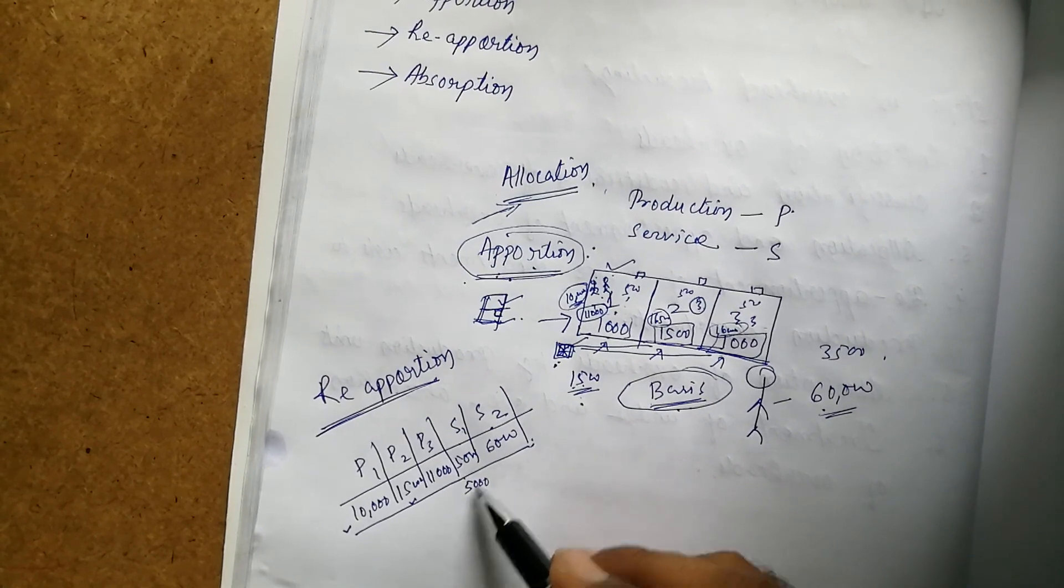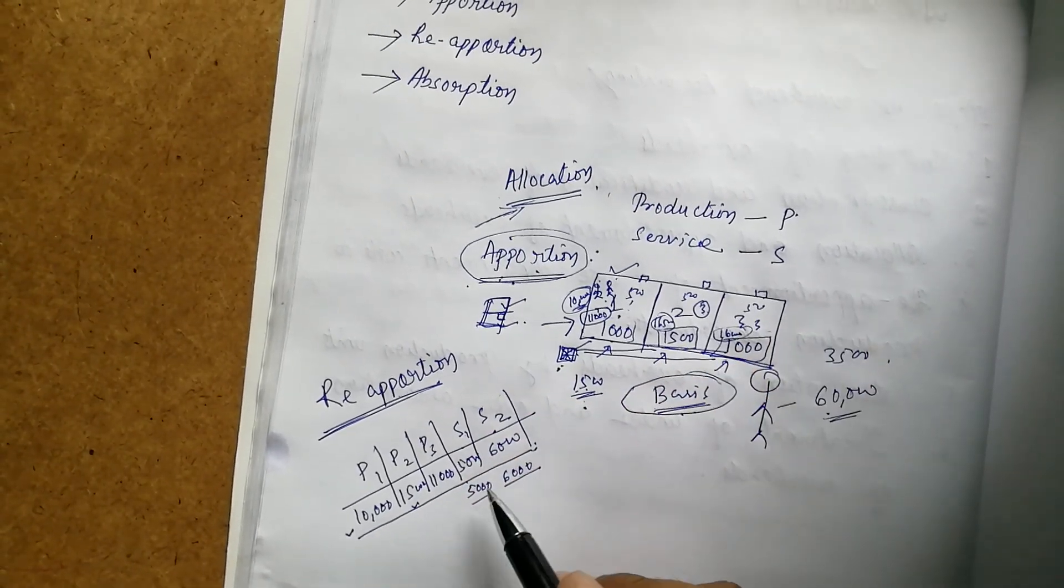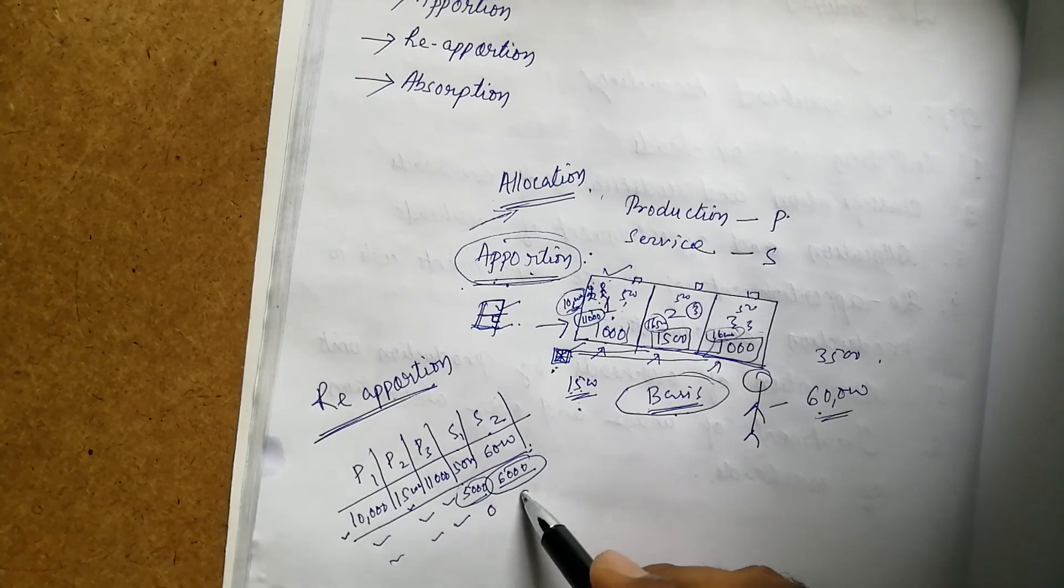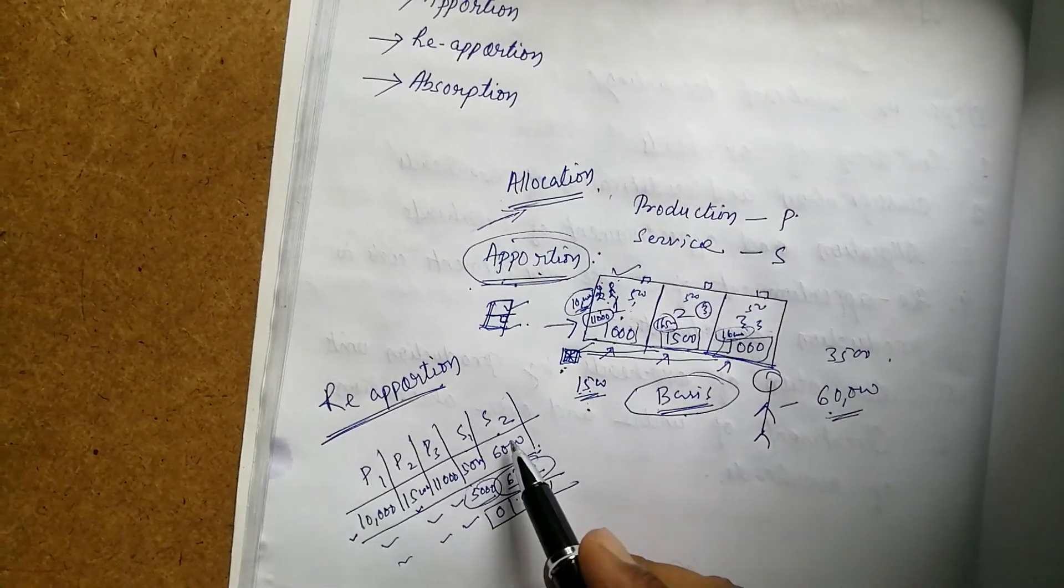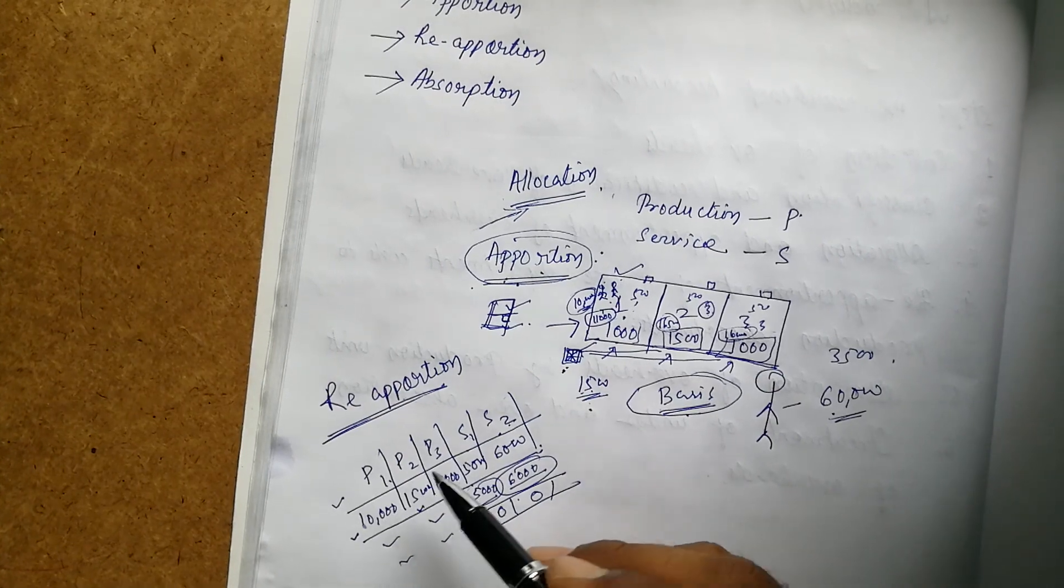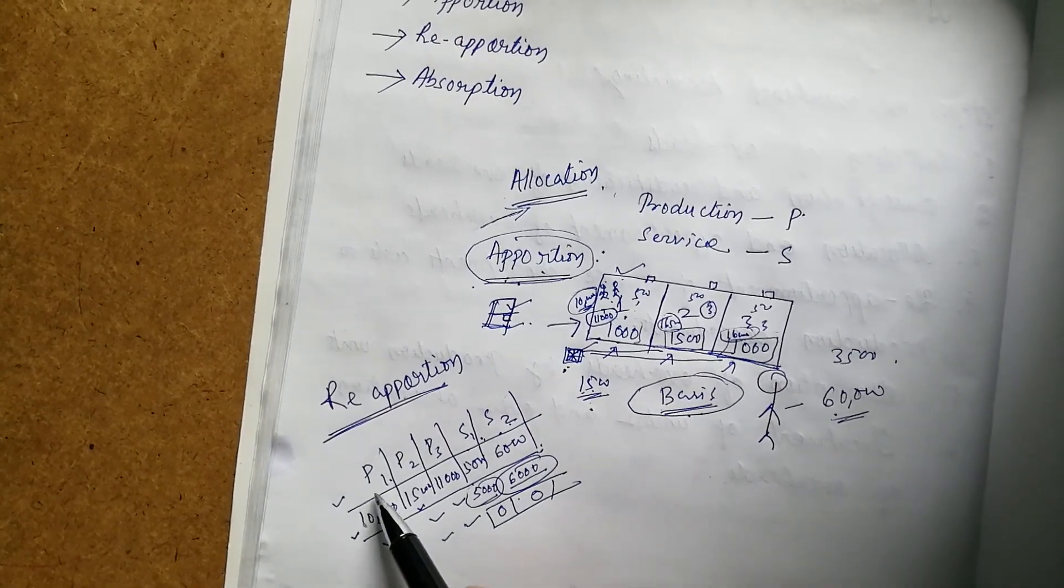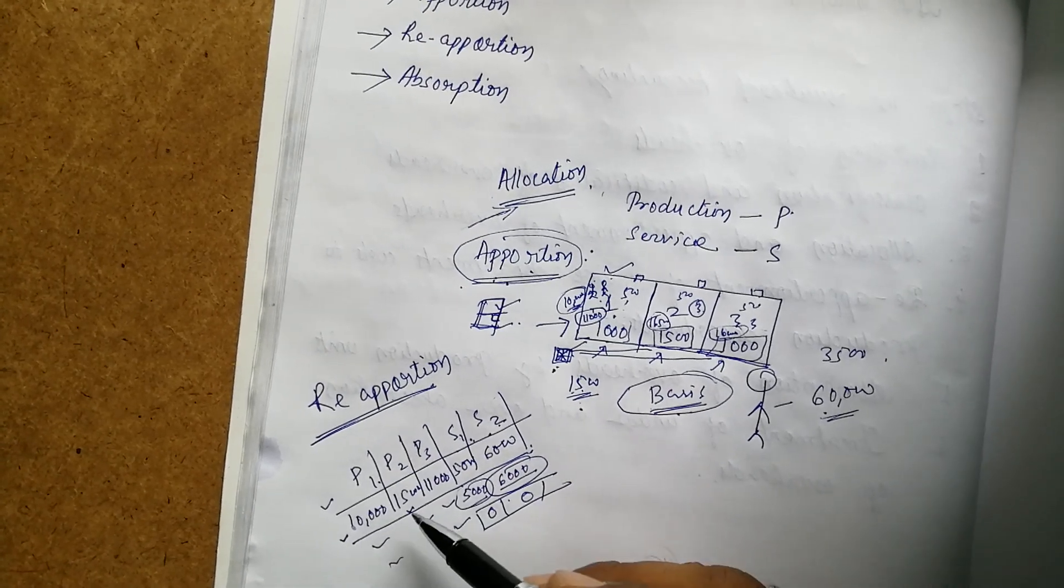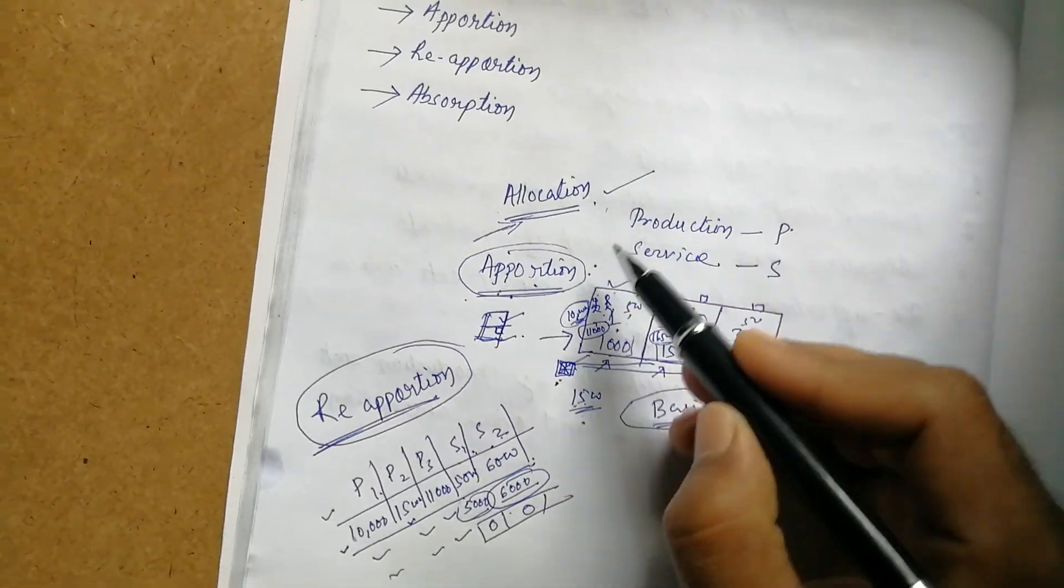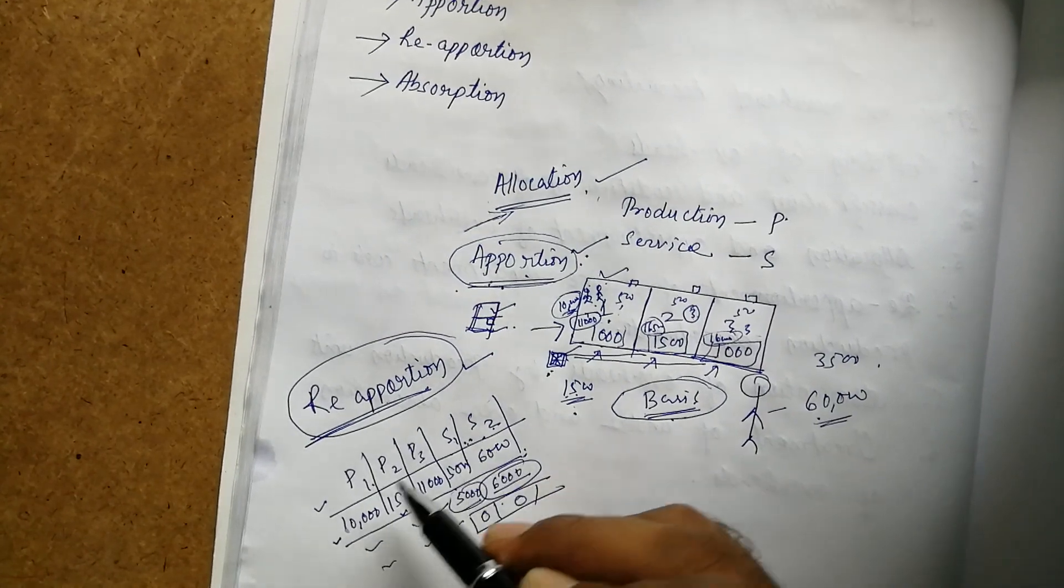So P1, P2, P3, S1, S2 have expenses in each cost center. Now, S1 has 5,000 and S2 has 6,000. These expenses in S1 and S2 cannot remain there—this 5,000 and 6,000, total 11,000, must be distributed. S1 and S2 expenses must become zero. Their expenses will be distributed to the production departments. This process of distributing service department expenses to production departments is known as re-apportion. Allocation means direct expenses, apportion means common expenses distributed, re-apportion means service department expenses distributed to production departments.